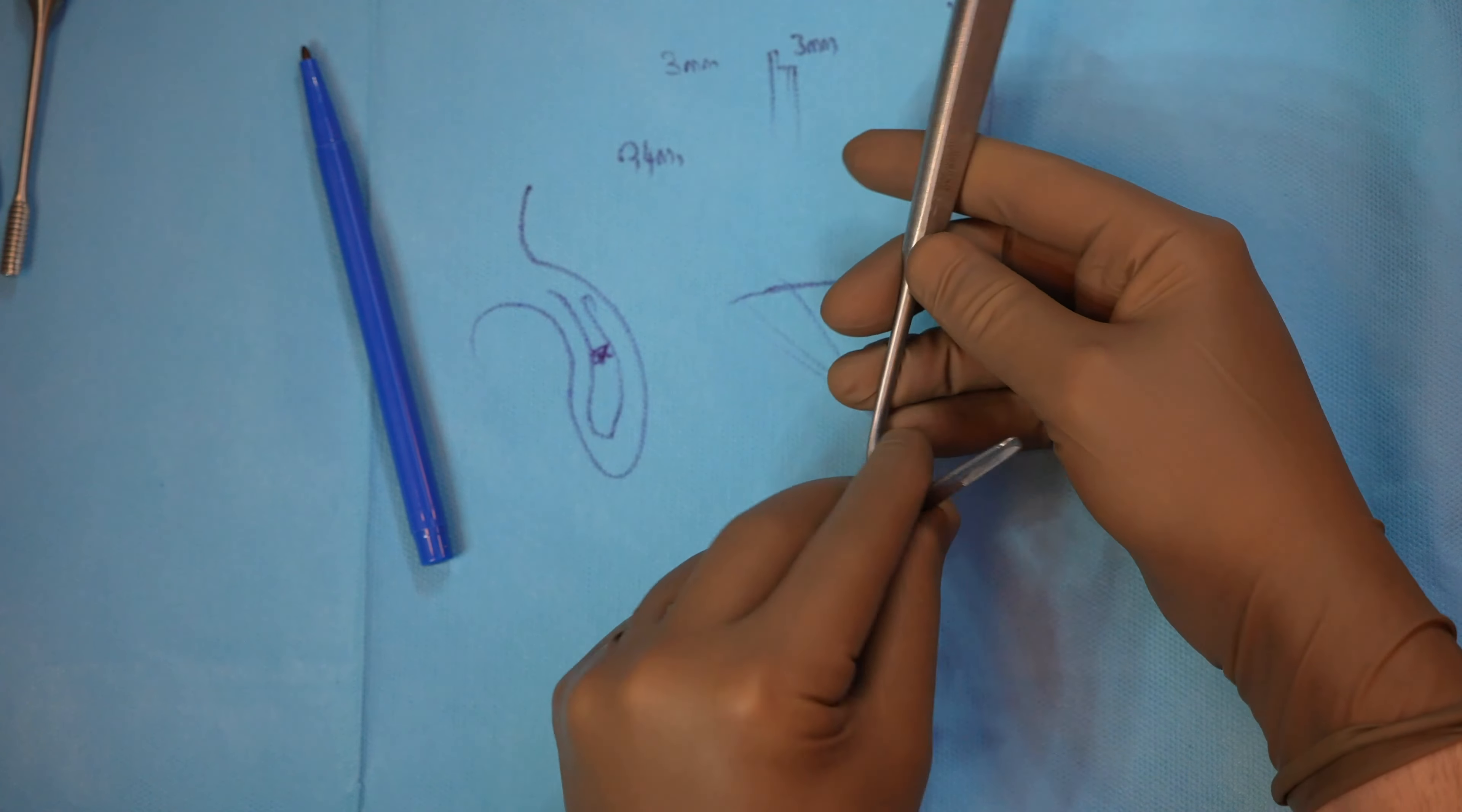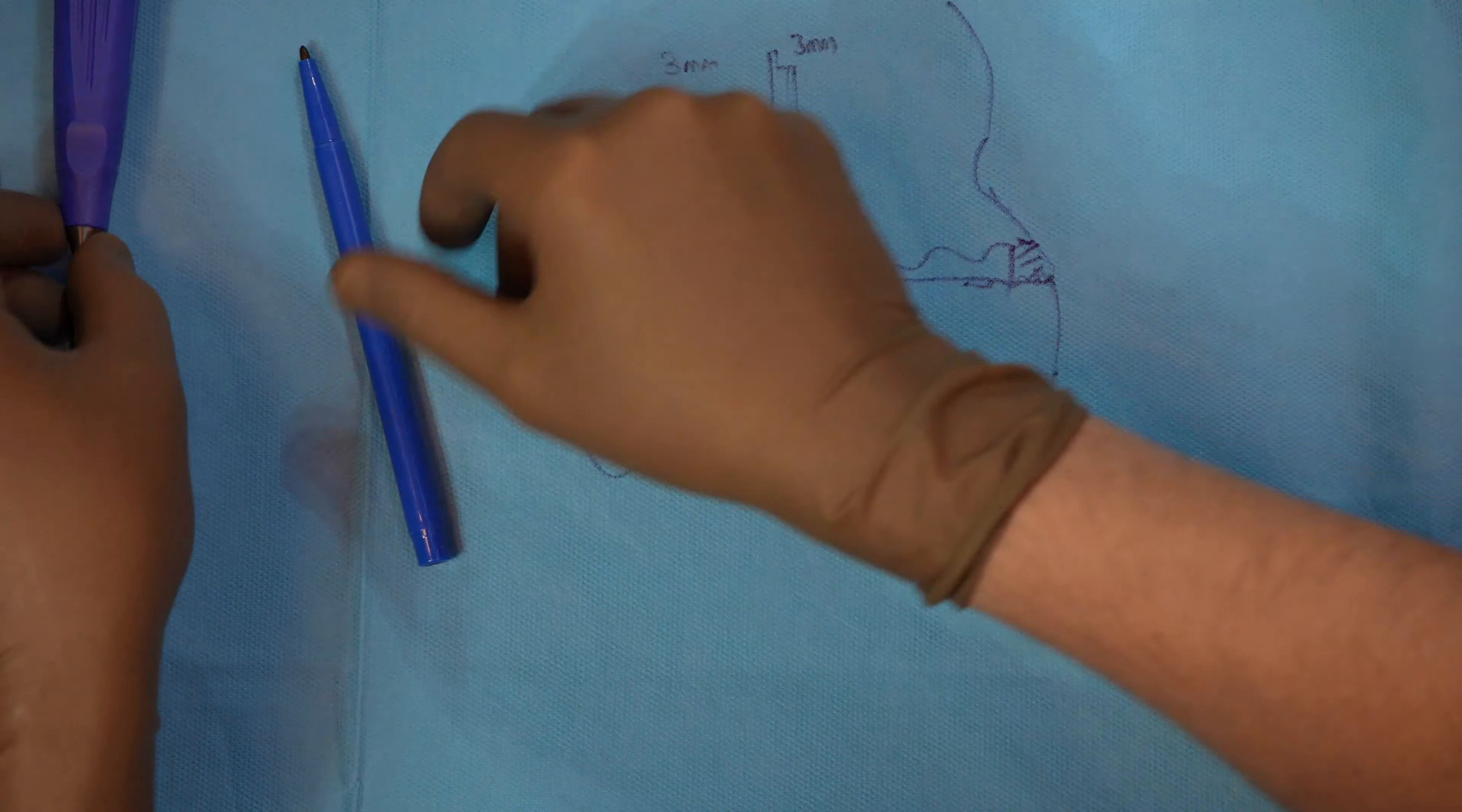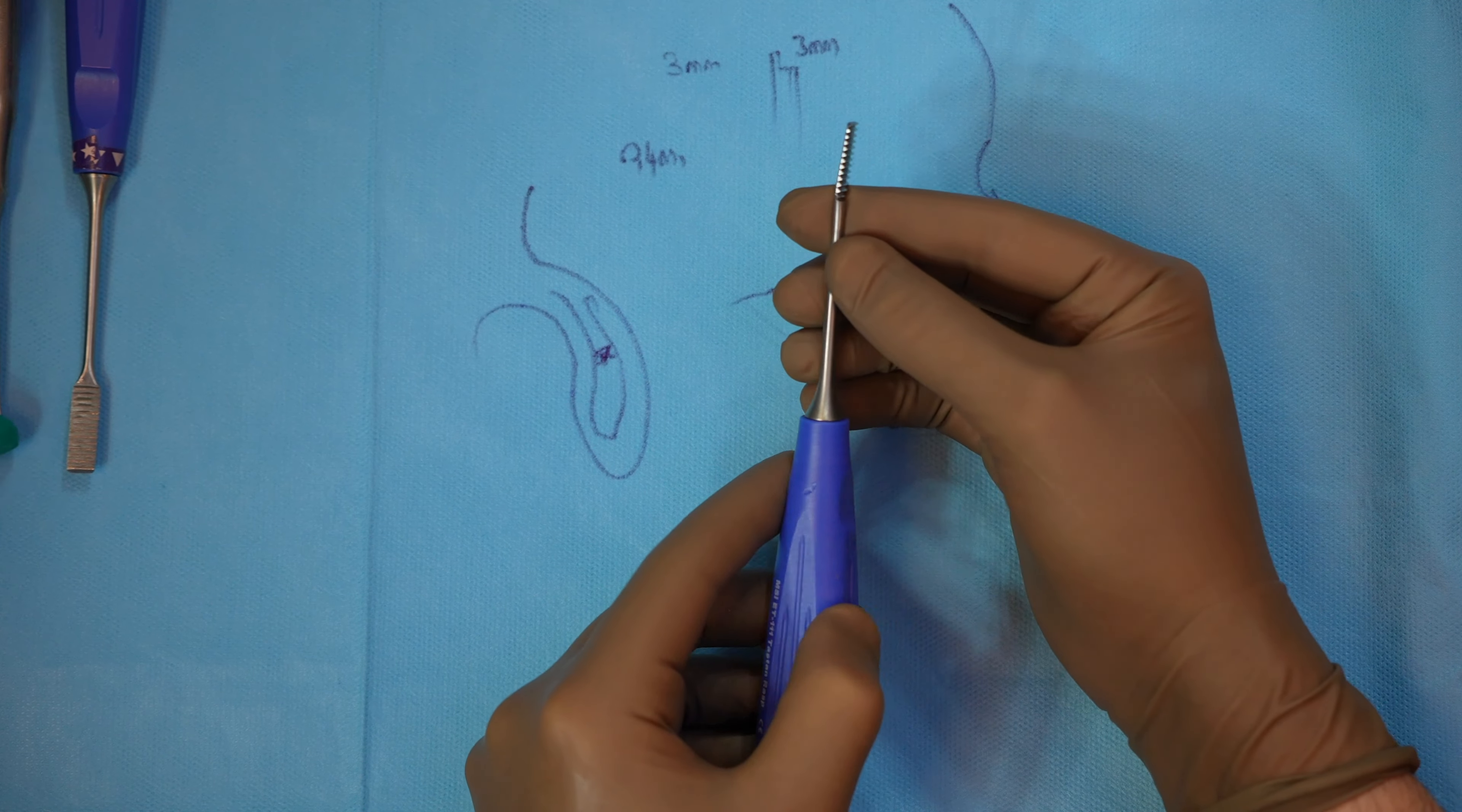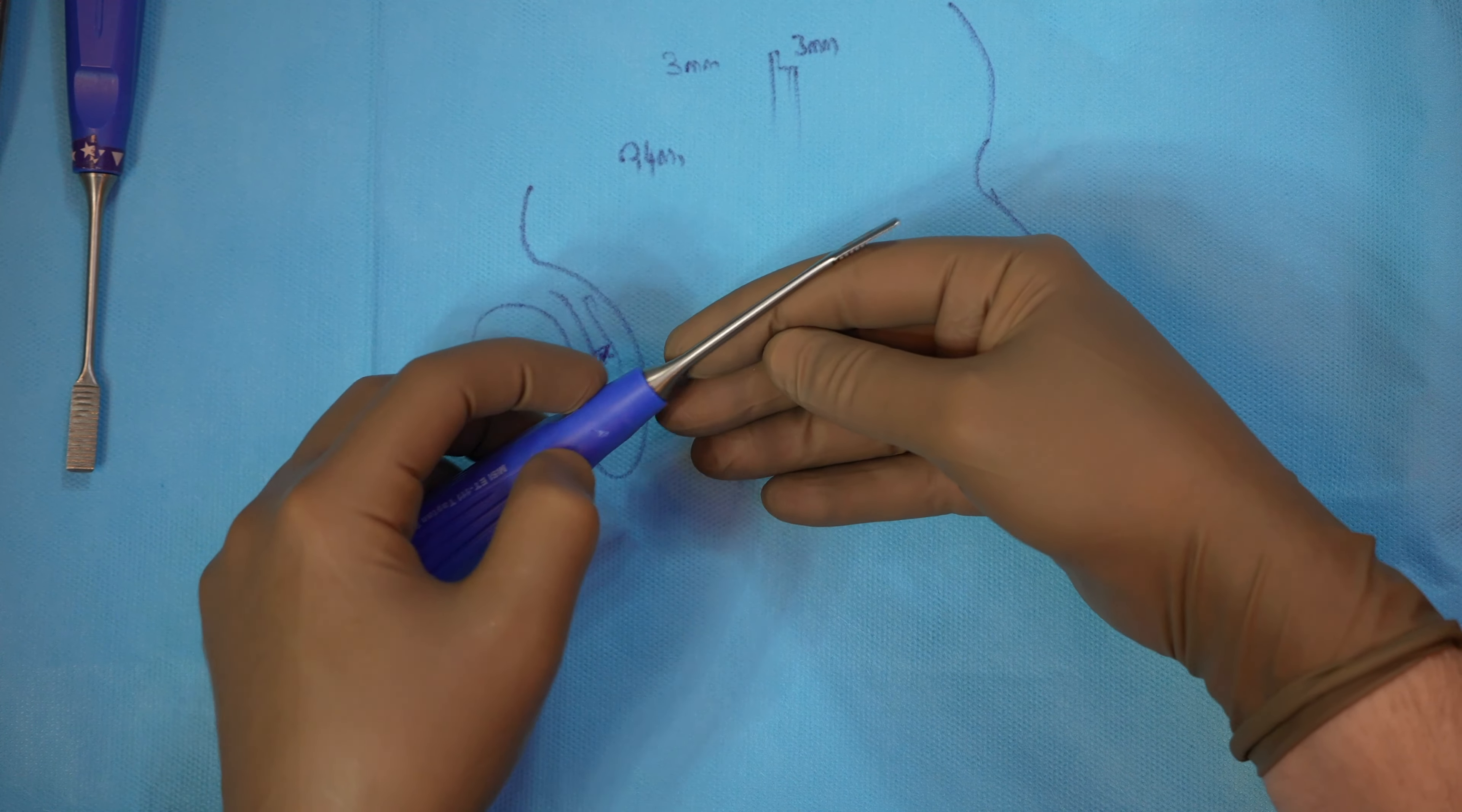This is Öskilab Ofric Retractor. It's really thin, so it's nice to use in close approach. Another one, this is lateral osteotomy rasp, Elen Tashtan design again. That neck angle is good to go to the lateral side.